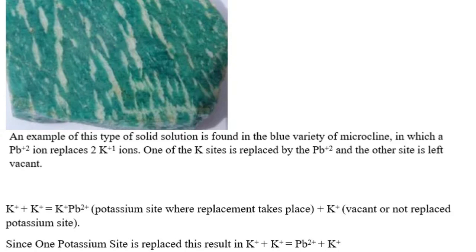In this blue variety of microcline, Lead 2+ ion replaces two of the potassium ions. But since there are two potassium sites, one of the potassium sites will be replaced by Lead 2+, whereas the other site will be omitted or left out. Thus, the name omission solid solution implies that one site will be omitted or left unreplaced. Therefore, the vacancy becomes a color center which produces the characteristic color of this green variety of alkali feldspar.